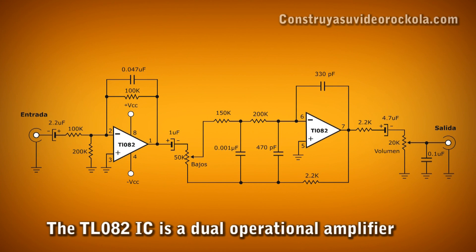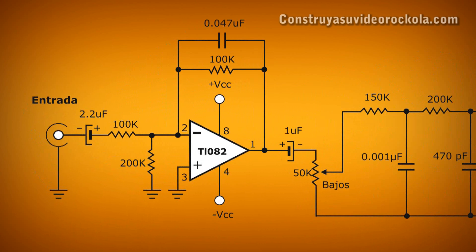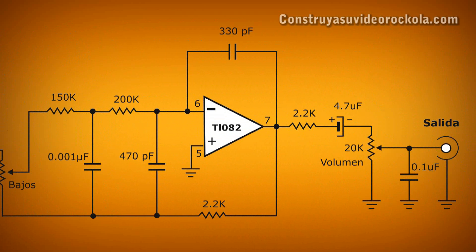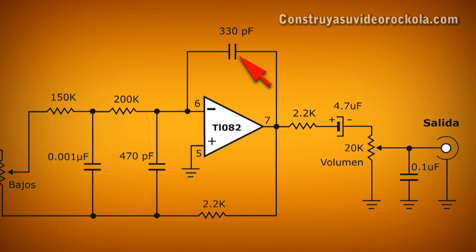The low pass filter works with a TL082 IC. This integrated circuit has two operational amplifiers within. The first operational amplifier restricts the low frequencies using a 0.047 µF capacitor in parallel with feedback resistors of 100K. In the second stage, low frequencies are enhanced, and the high and mid frequencies are restricted again using a 303 pF capacitor.